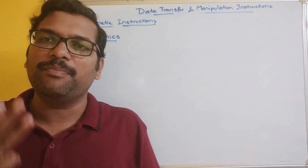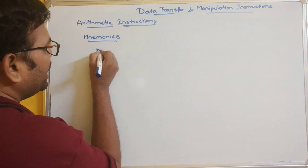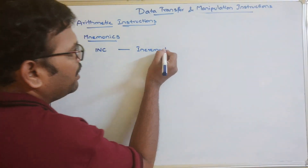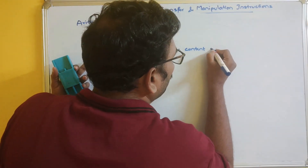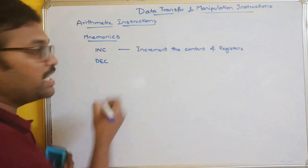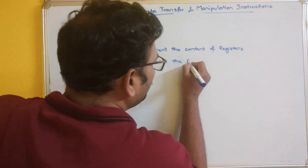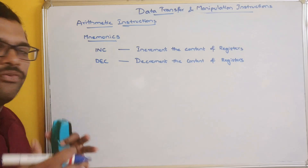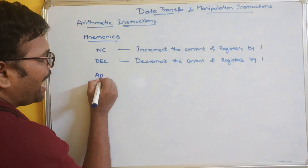By listening to the name arithmetic, we have an idea of arithmetic operations: addition, subtraction, multiplication, and division. These come under arithmetic instructions. Apart from these, there are a few more. INC is the mnemonic which means increment - it increments the content of a register. Similarly, DEC means decrement - it decrements, that is, reduces the content of registers.